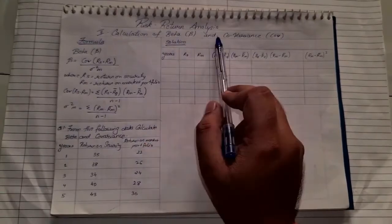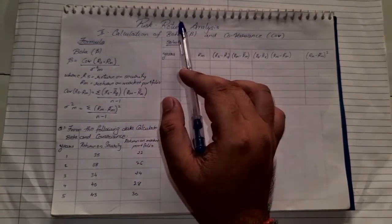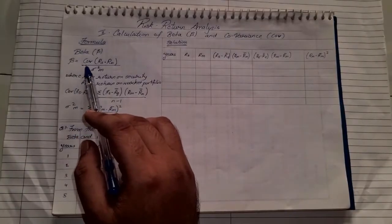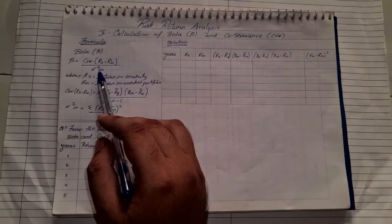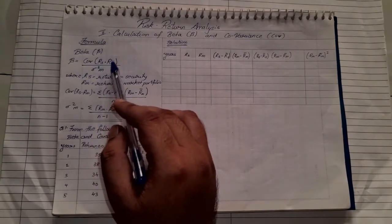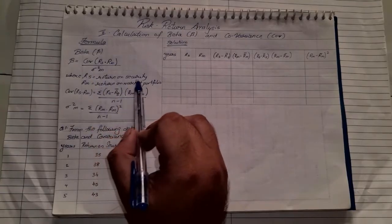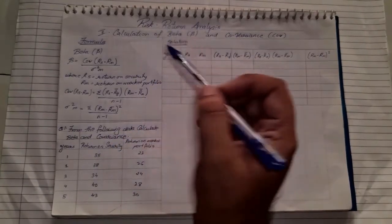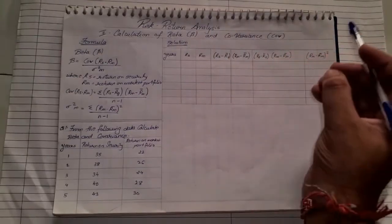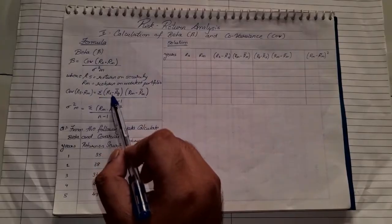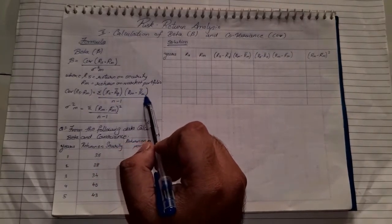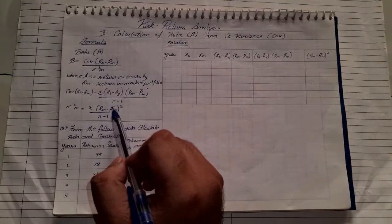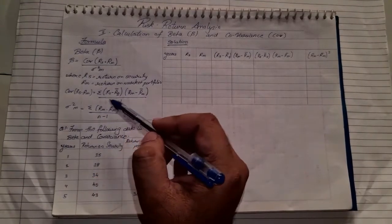Let us see how to calculate beta and covariance under the chapter Risk and Return Analysis. The formula for beta is: covariance upon standard deviation squared of M, where covariance is between RS and RM. RS stands for return on security, RM stands for return on market portfolio. The covariance formula is: sigma of (RS minus R-bar-S) into (RM minus R-bar-M) upon N minus 1. Standard deviation squared M is: summation of (RM minus R-bar-M) squared upon N minus 1.